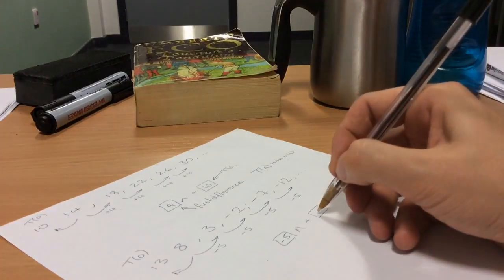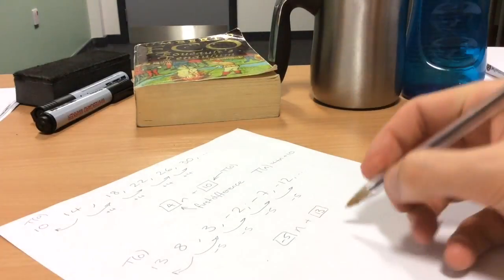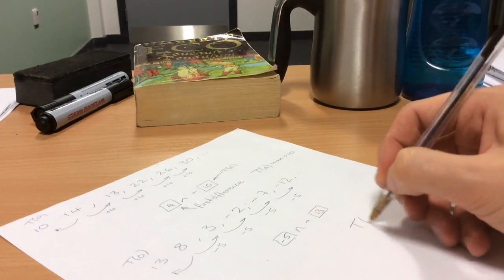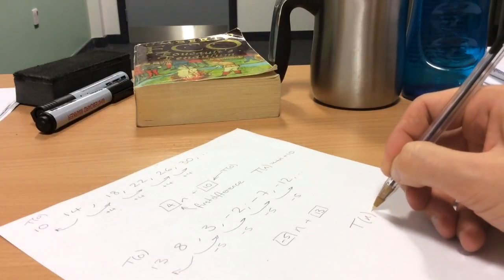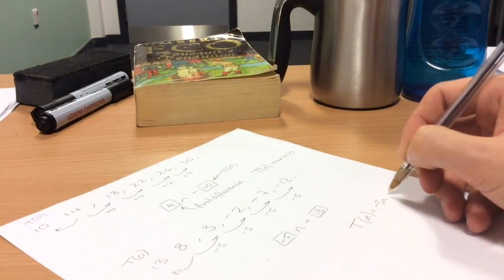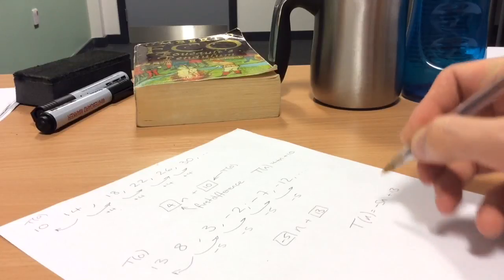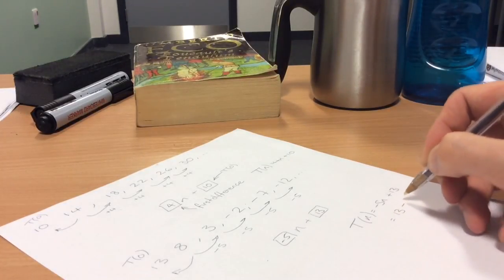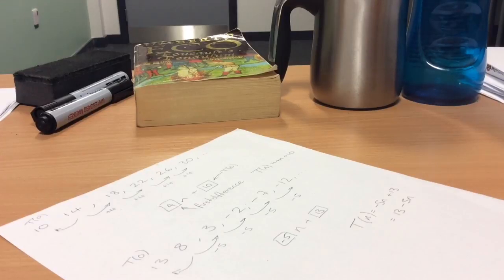So the nth term for this question is going to be negative 5n plus 13. And sometimes it's nicer to just write 13 minus 5n. I hope the prep goes okay and if you have any questions please come and see me about them. Thanks.